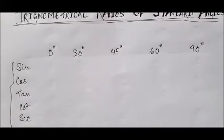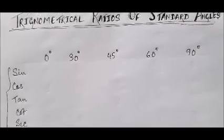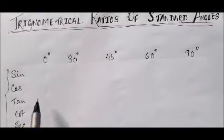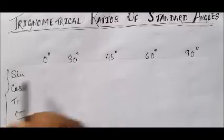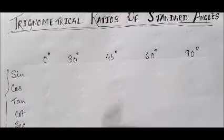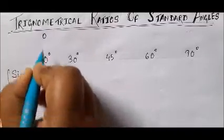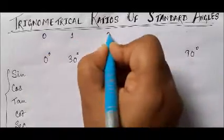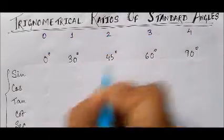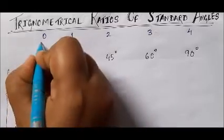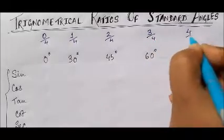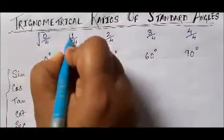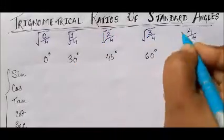First, how to find out the value of sine 0 degree, sine 30 degree, sine 45 degree, sine 60 degree, and sine 90 degree. For this, we write 0 above 0 degree, then 1, then 2, then 3, then 4. After that, we divide each digit by 4, and then we find out the square root of each of these fractions.